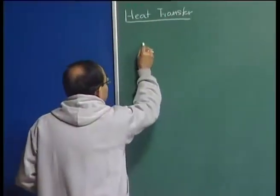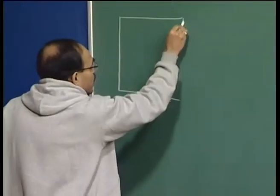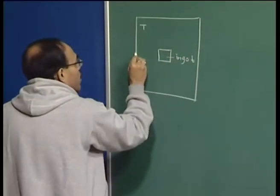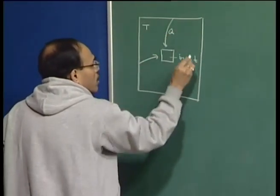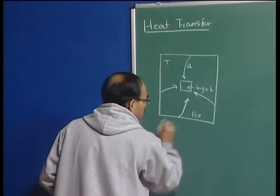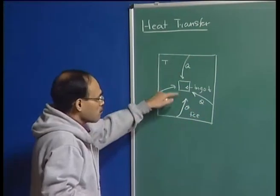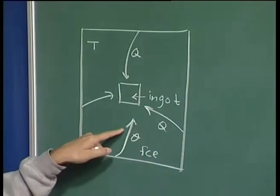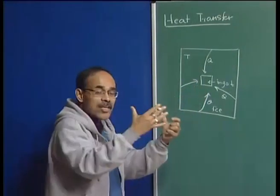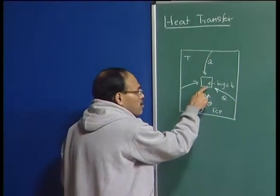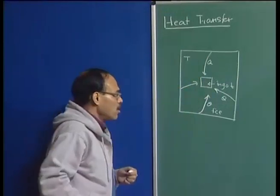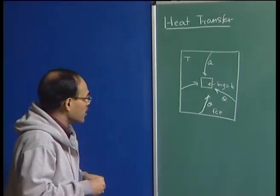For example, if you have a furnace and in this furnace I have kept an ingot at a temperature T, heat Q is flowing from the furnace into the ingot by several mechanisms which we are going to discuss. As a result of this transport of heat, the object's temperature continuously increases. The rate at which the surface temperature increases and the rate at which the inside temperature increases are dramatically different, because of the resistance of the solid material to heat flow.